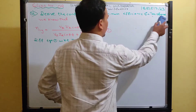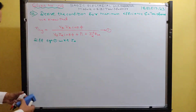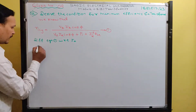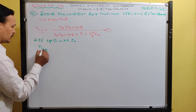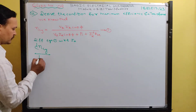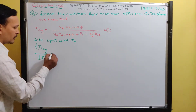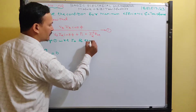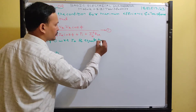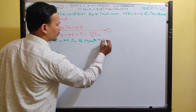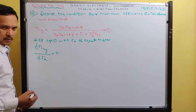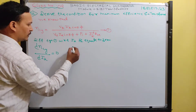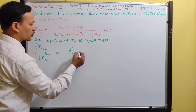Differentiate equation 1 with respect to I2, and equate to zero. The efficiency equation is in the form of a quotient U/V, so we apply the U by V quotient rule. Numerator is U, denominator is V.